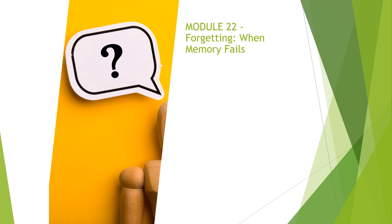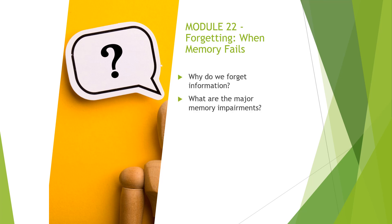The last module of Chapter 7 is Module 22, and we're going to talk about forgetting and why we forget information — so why memory fails. The two questions we're going to answer in this module are: why do we forget information, and what are the major memory impairments that we have?